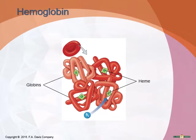When hemoglobin transports CO2, one CO2 molecule binds with one globin molecule, carrying four CO2s per hemoglobin. How much oxygen the blood can carry depends on the quantity of red blood cells and the amount of hemoglobin each cell contains. When CO2 is bound to hemoglobin, it has a special name: carbaminohemoglobin.